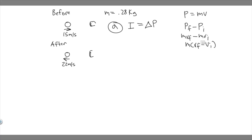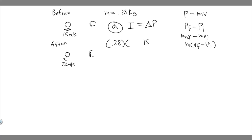This is the formula we're going to use: just M times V final minus V initial. The mass of our ball is 0.28 kilograms. When doing this, you need to take into account the direction the ball is traveling, and we do that using signs. Since it's going to the right, I'll say right is positive and left is negative. So the initial velocity is positive 15, and the final velocity is going to the left, so it's negative 22. That gives us 0.28 times (−22 − 15).